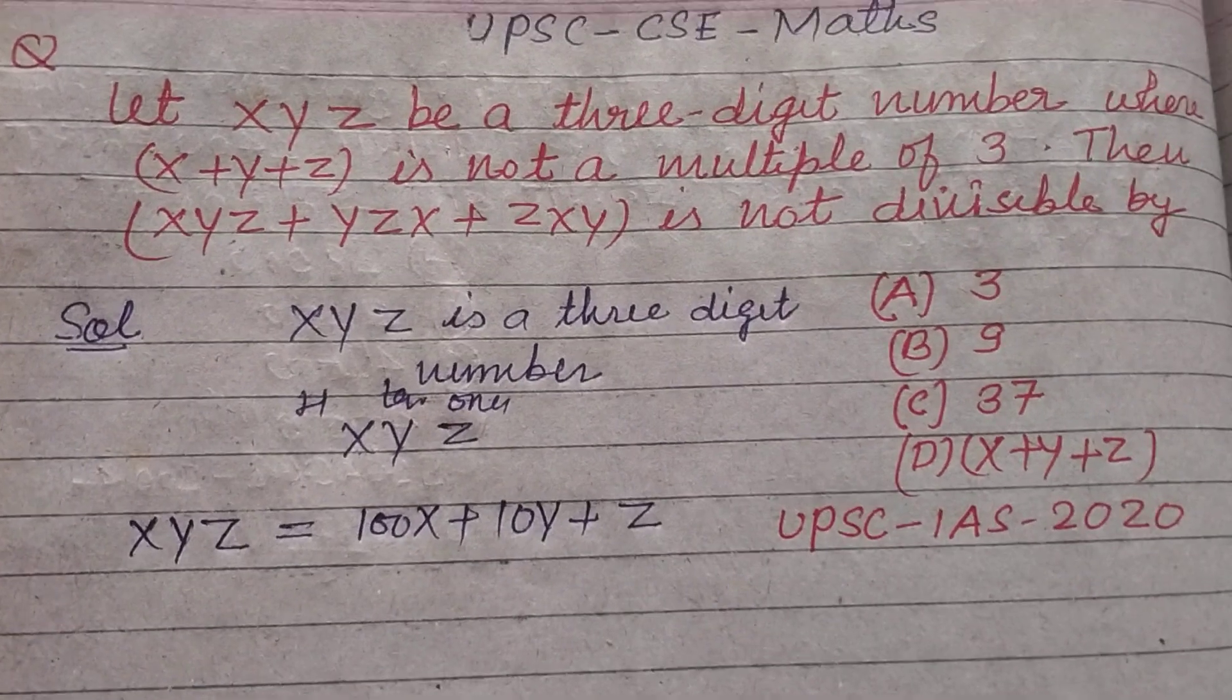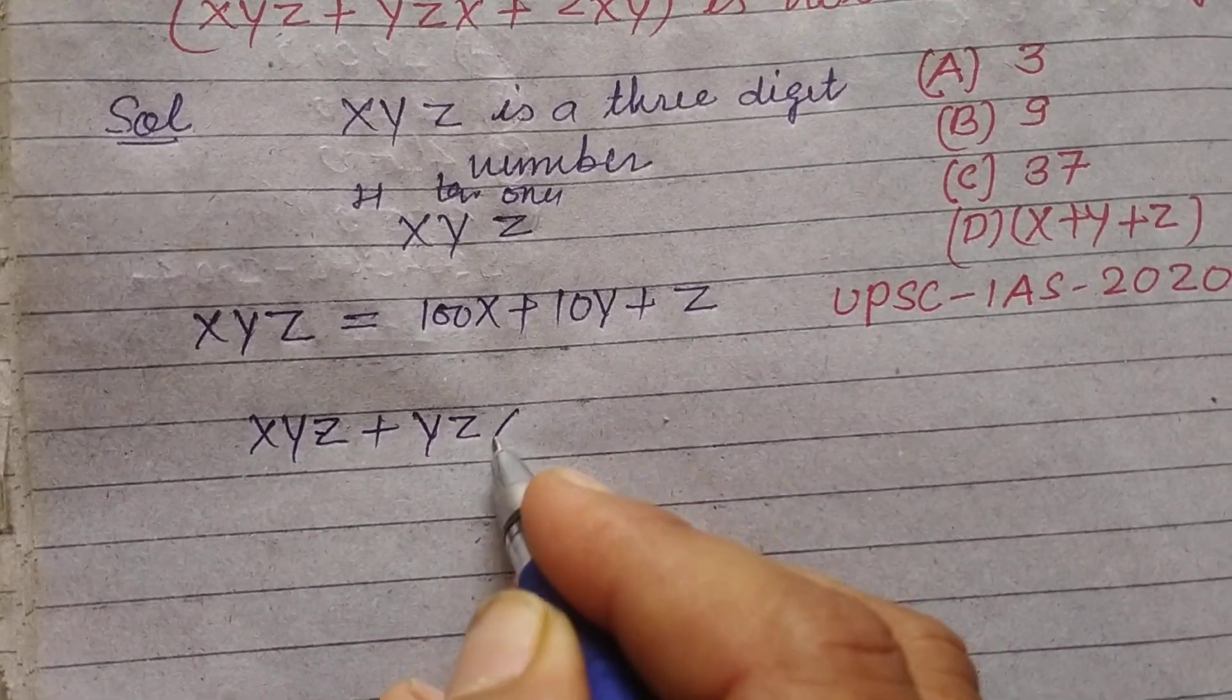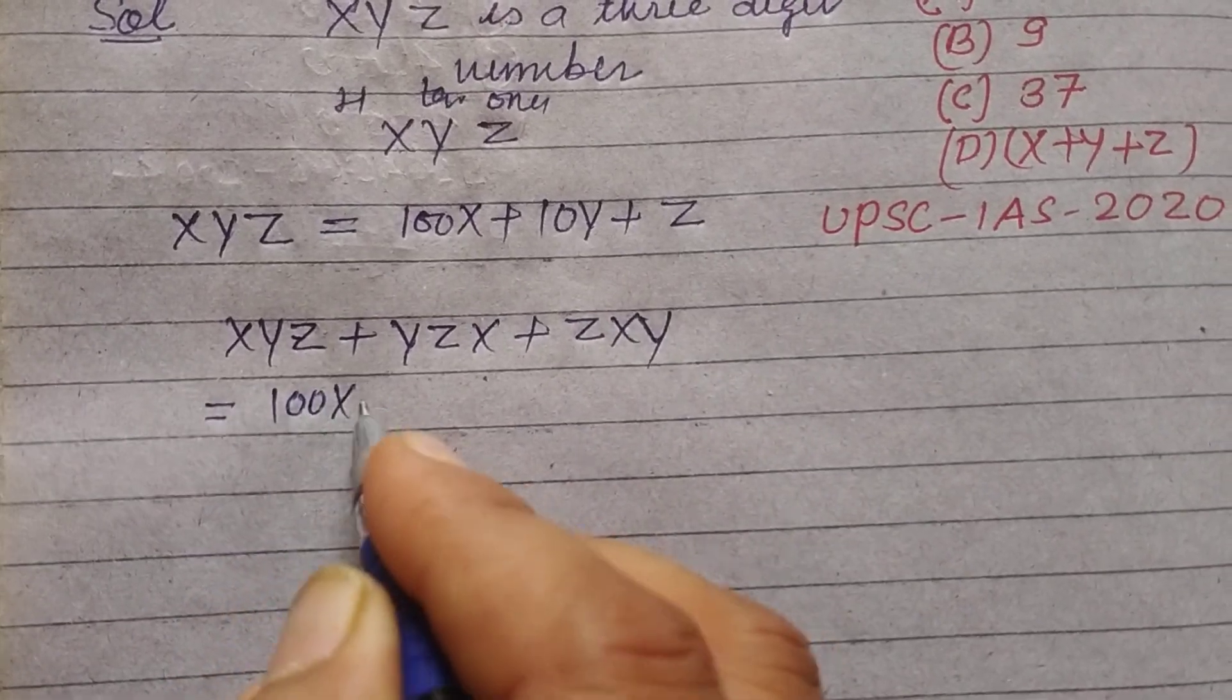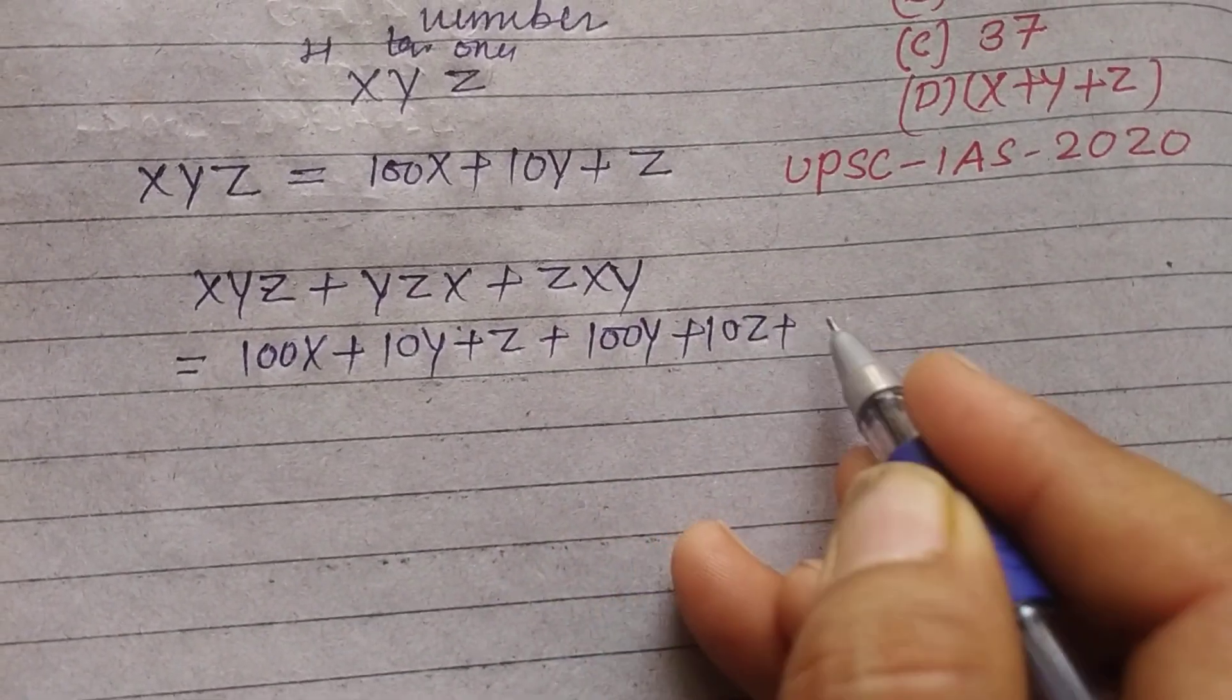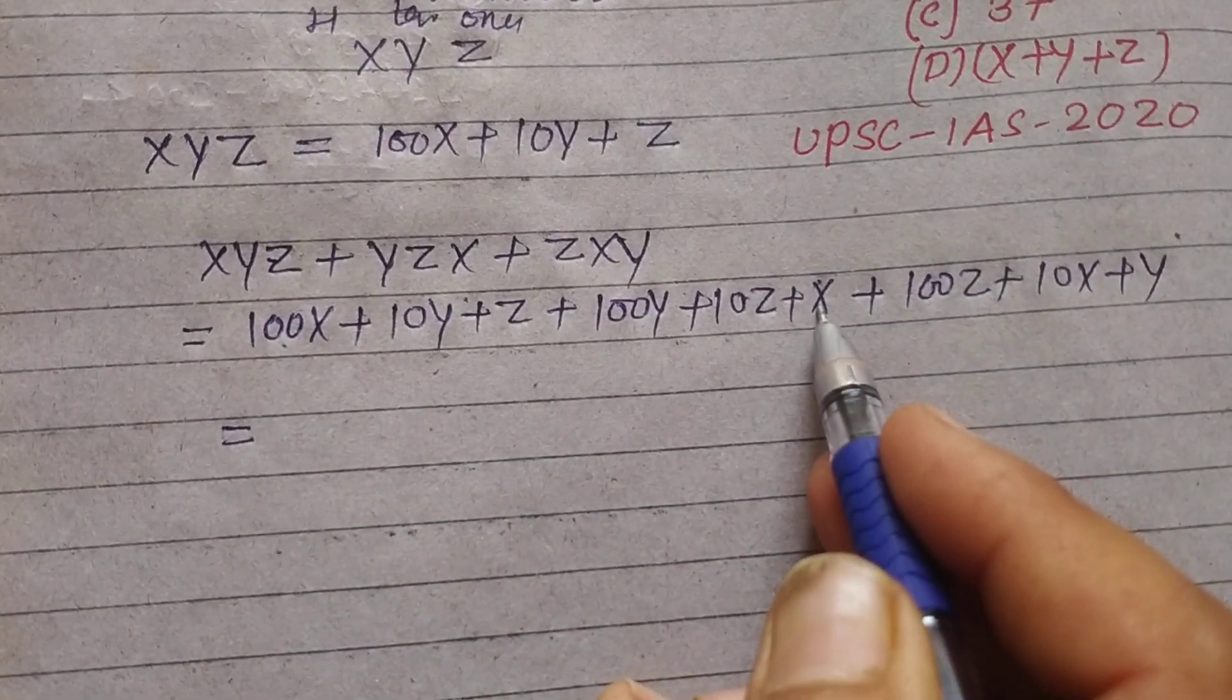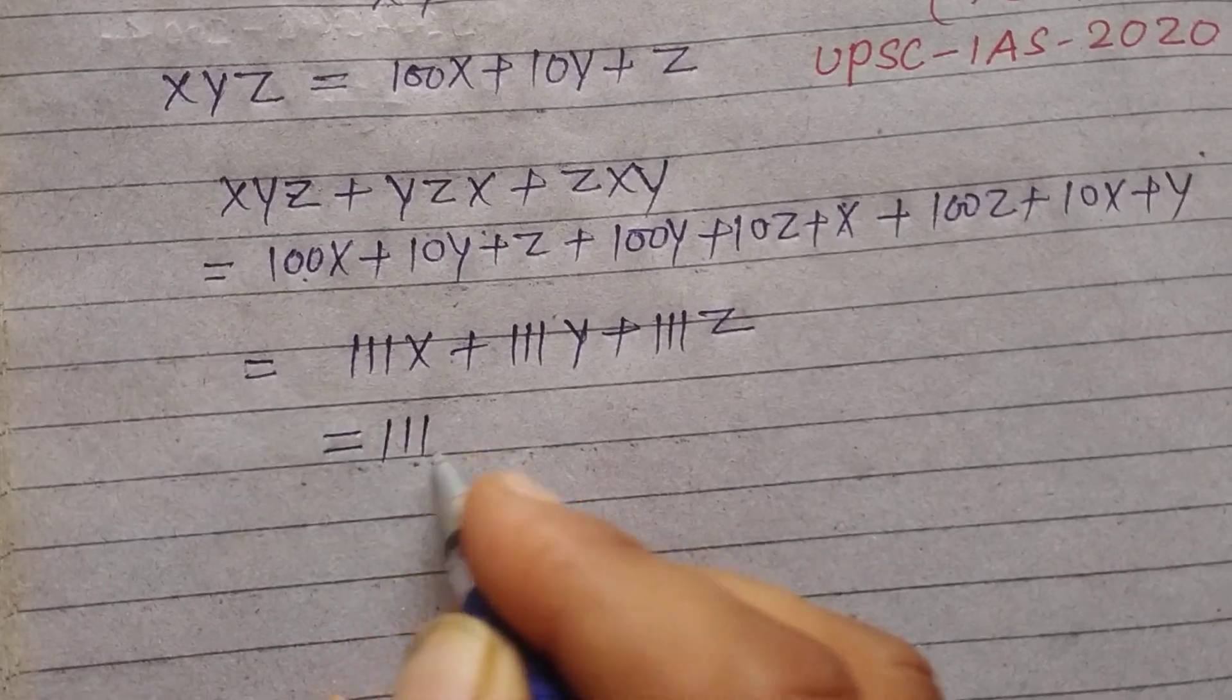Now we take xyz+yzx+zxy. We write the expanded form of these three numbers: 100x+10y+z, 100y+10z+x, 100z+10x+y. Here we have 111x+111y+111z, so 111 is common from these, which equals 111(x+y+z). This equals 3×37(x+y+z).